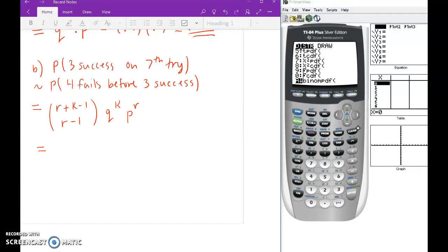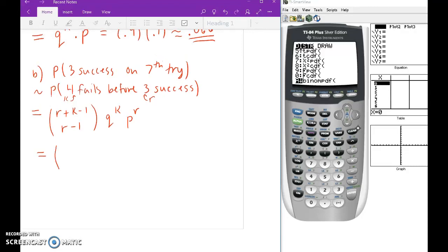All right, so remember fails is k and successes is r. So this 4 is the k, and then the r value, that's the 3. All right, so if you add r plus k, you get 7, of course, and it's the total number of trials. So this combination becomes 7 subtract 1, which is 6, and then 3 subtract 1, which is 2. So that's 6 choose 2, q to the k power, and now remember q is 0.9, so that's 0.9 to the 4. And then p is 0.1, and that's to the 3.